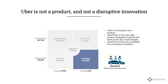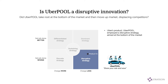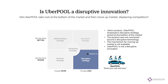Uber Pool, on the other hand, is the only Uber product designed to get the job done worse and more cheaply, making it the only real candidate for this analysis. Is Uber Pool a disruptive innovation — a product that took root at the bottom of the market and then moved up relentlessly, displacing competitors at the high end? Uber Pool employed a disruptive strategy aimed at the bottom of the market, but the product was not conceived around a disruptive technology. Therefore, the mechanism for moving up-market is not available to them, making Uber Pool an innovation that is not disruptive.